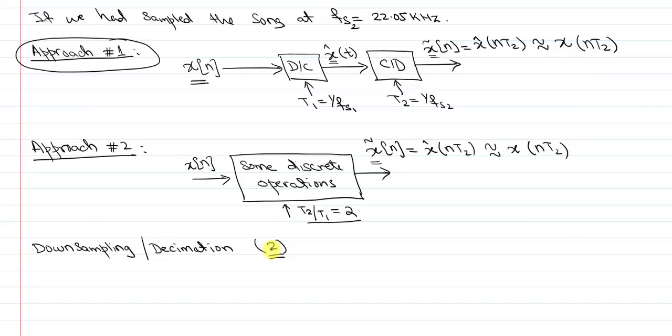Now one thing that you should notice here is that there is a possibility of aliasing. If my new sampling rate is much smaller than the bandwidth of my original signal that I sampled, assume my original song had a bandwidth of 20 kilohertz. When I sampled it with 44.1 kilohertz, I had no aliasing. I reconstructed this signal.